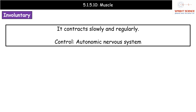The key thing about how this involuntary muscle contracts is that it's slow and regular — this is not rapid contraction. It's just a very slow, regular contraction that takes place, and it's controlled by the autonomic nervous system.